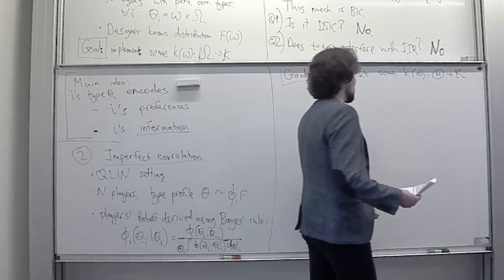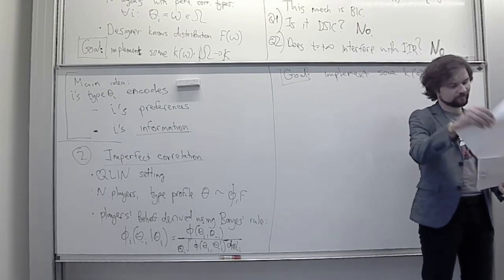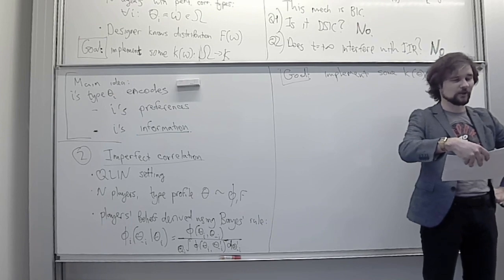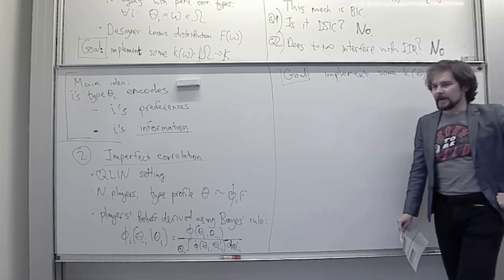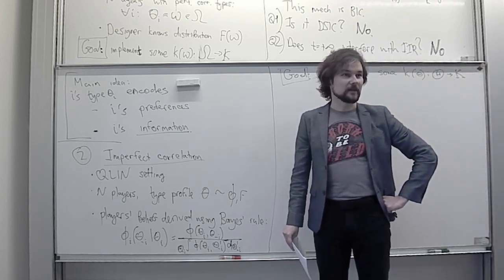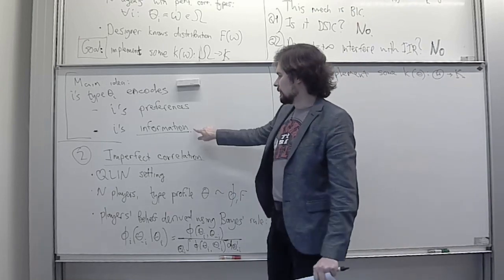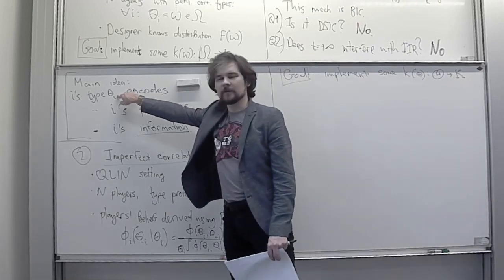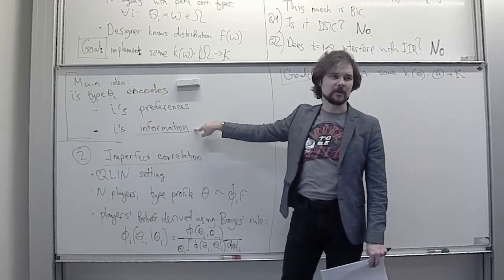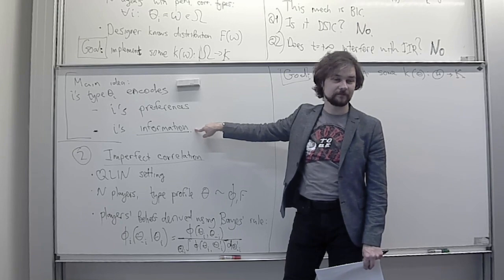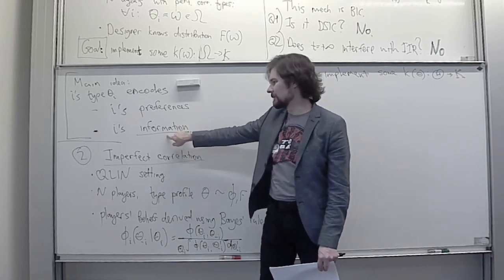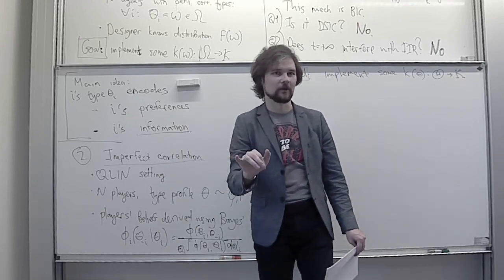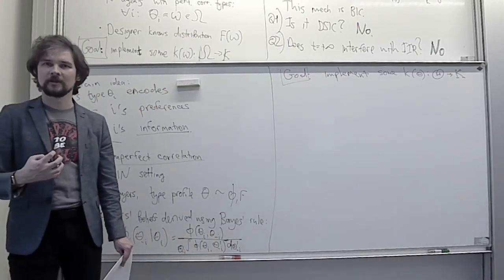How can we extract this information? We skip a small example for now and may return to it later. We will be able to implement our goal under one condition: every different type of player i must have different information about other players' types. So we need to extract information about information, meaning types must be properly correlated and every type of player i must have specific knowledge of other players' types.